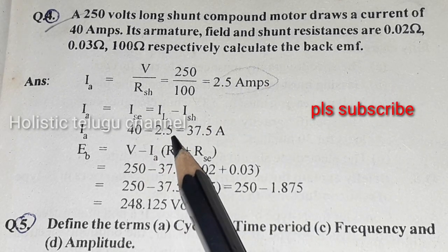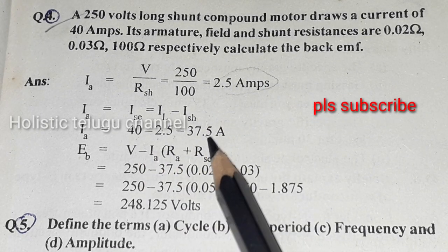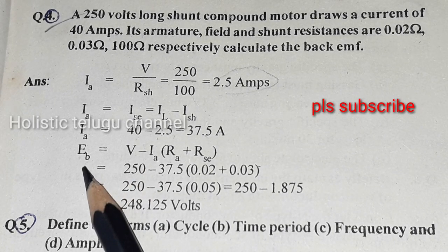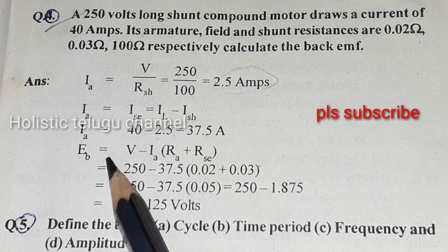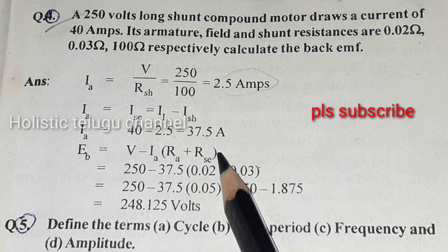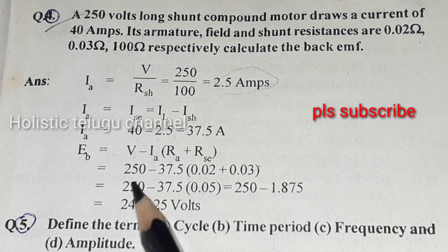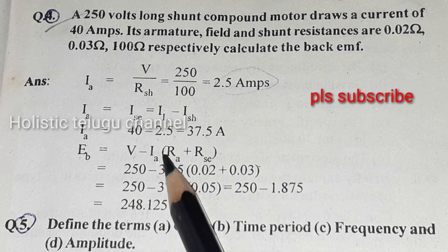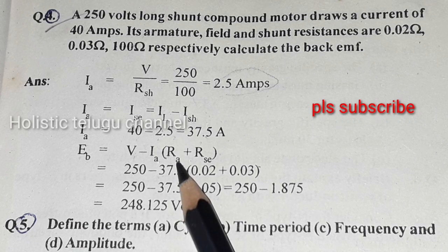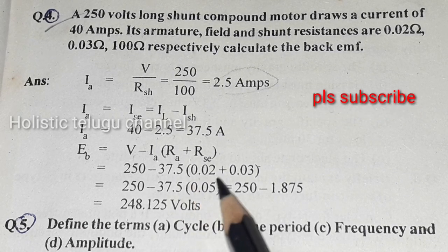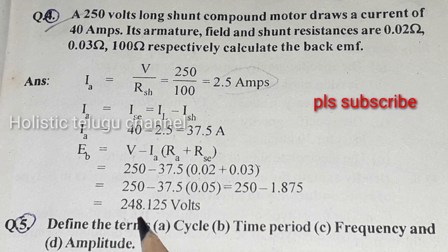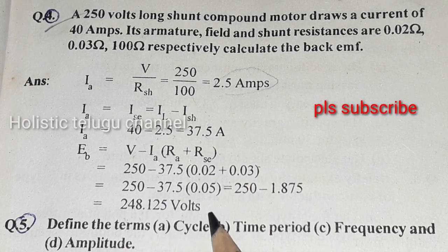Back EMF EB equals V minus IA times (RA plus RSE). So EB equals 250 minus 37.5 times (0.02 plus 0.03), giving a back EMF of 248.125 volts.